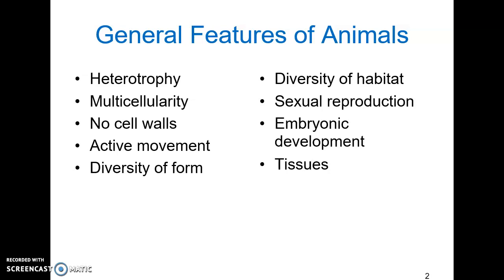Many animals show a pattern from embryo to larva — an immature form that has a different habitat and diet when compared to the adult. The larvae will undergo metamorphosis to turn into the adult form. Finally, most animals have tissues, collections of cells that look and act very similar, that all work together to perform a common task.